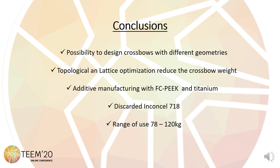The Runner models have better performance than the Sprinter in terms of stiffness. On the other hand, topological and lattice optimization made it possible to reduce the mass of the models. With regards to materials, the most notable finding is the discarding of Inconel due to its high density.